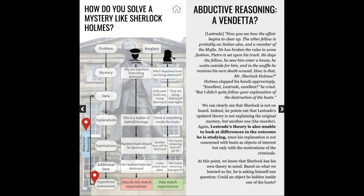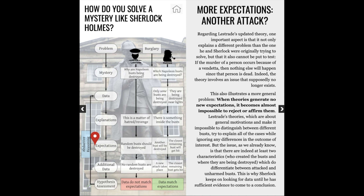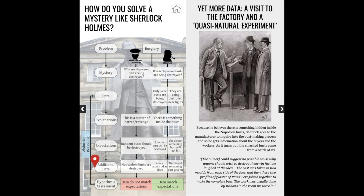For Sherlock, the offender is after something that is hidden inside at least one of the busts. His hypothesis then needs to be tested, and he does that through the expectations that the hypothesis produces. After inquiring about the bust-making process, Sherlock finds out that the busts come from a batch of six and that only two of them are left. He sets up what we call a quasi-natural experiment, which allows him to distinguish between rival hypotheses of why busts are being destroyed. If he's wrong, nothing will happen with those particular busts; but if he's right, they will continue to be destroyed until the criminal finds what they are after.